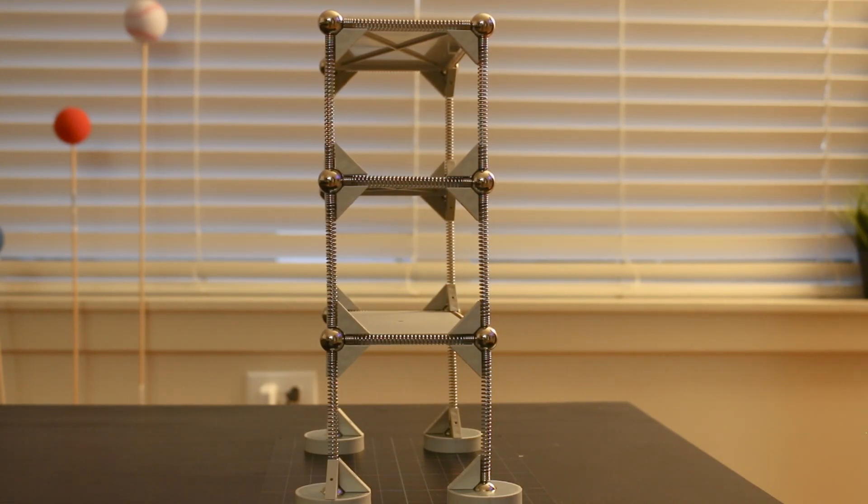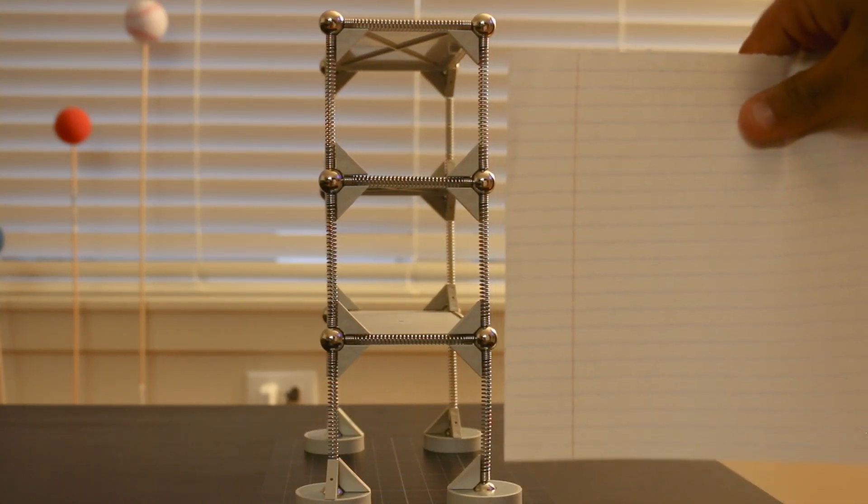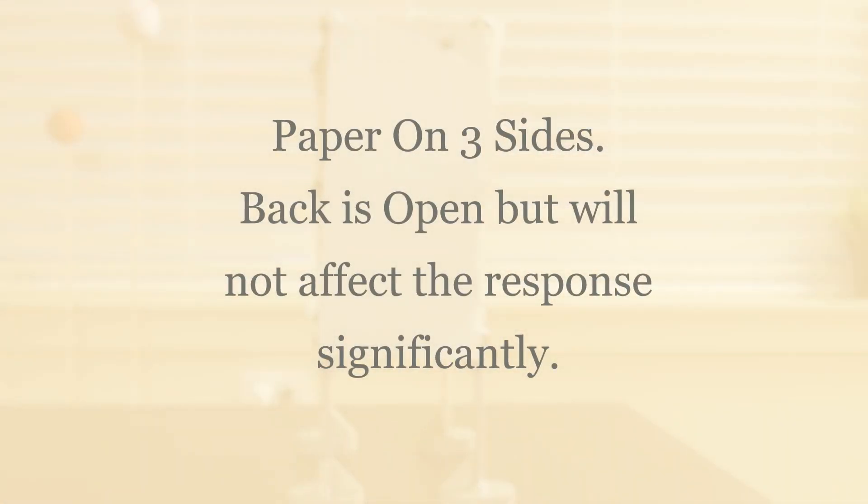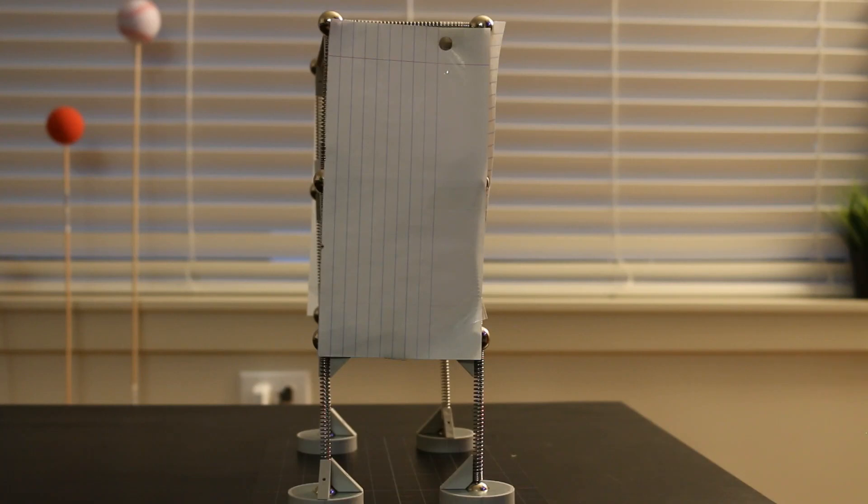But now what I'm doing is enclosing the structure with paper on all four sides. Once I do this, you'll see the difference. I've taped up the structure—there's paper on all four sides, totally enclosed, so wind has more surface area to act on. The wind flow will be obstructed by the paper, which is like a cladding for the structure. Because it's getting obstructed, it will be rerouted, and in that rerouting, the wind creates turbulences that are responsible for the structure's oscillation.